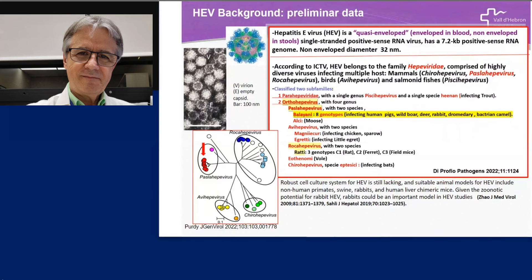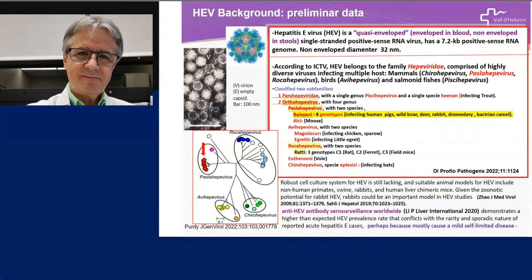Anti-hepatitis E virus antibody surveillance worldwide has demonstrated a highly unexpected hepatitis E virus prevalence rate that conflicts with the rarity and sporadic nature of reported acute hepatitis cases — perhaps because it mostly causes mild, self-limited disease.